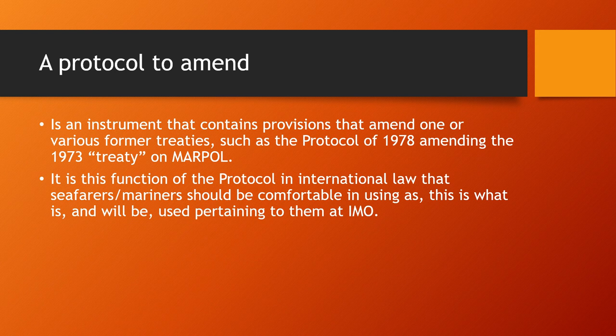Then we have a protocol to amend — an instrument that contains provisions that amend one or various former treaties. An example is the protocol of 1978, which amended the 1973 MARPOL treaty. MARPOL stands for the convention on marine pollution; it was introduced in 1973 and then further revised through the 1978 protocol. That is when the protocol was used to amend the MARPOL convention.